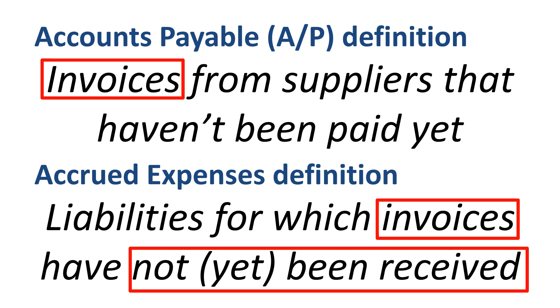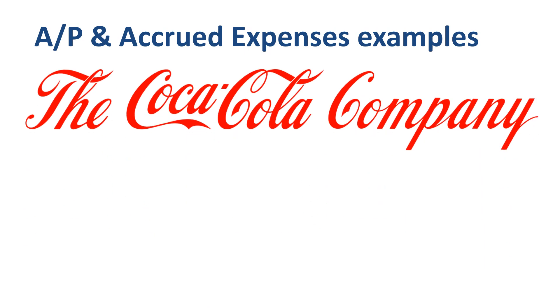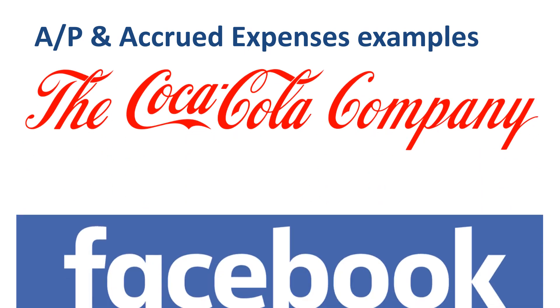Let's understand the terms better by going through some examples of what's actually in there. We will review the current liabilities part of the balance sheets of two well-known consumer brand companies whose products or services some of us use on a daily basis: the Coca-Cola Company and Facebook.